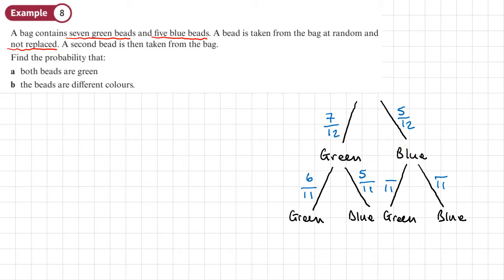If I've taken a blue bead out, there's still going to be seven greens. But the number of blue is going to go down by one. So that's now be four.